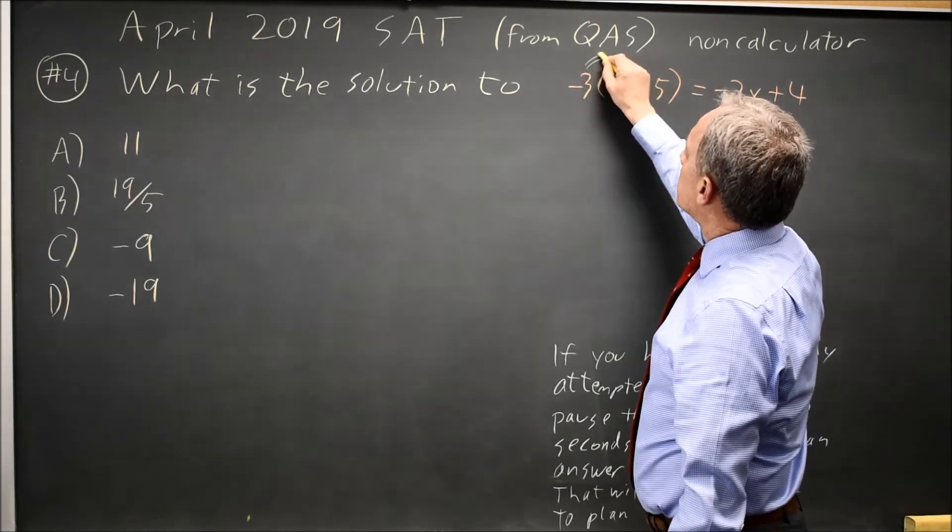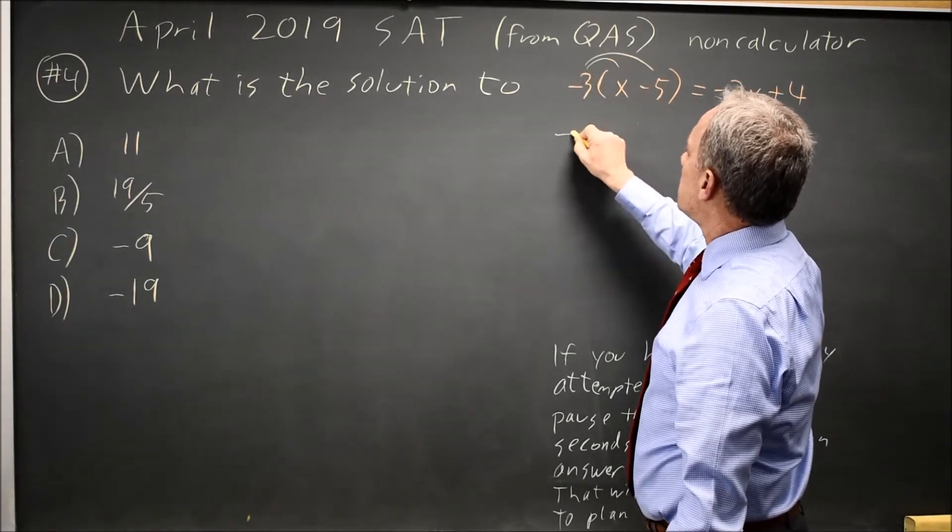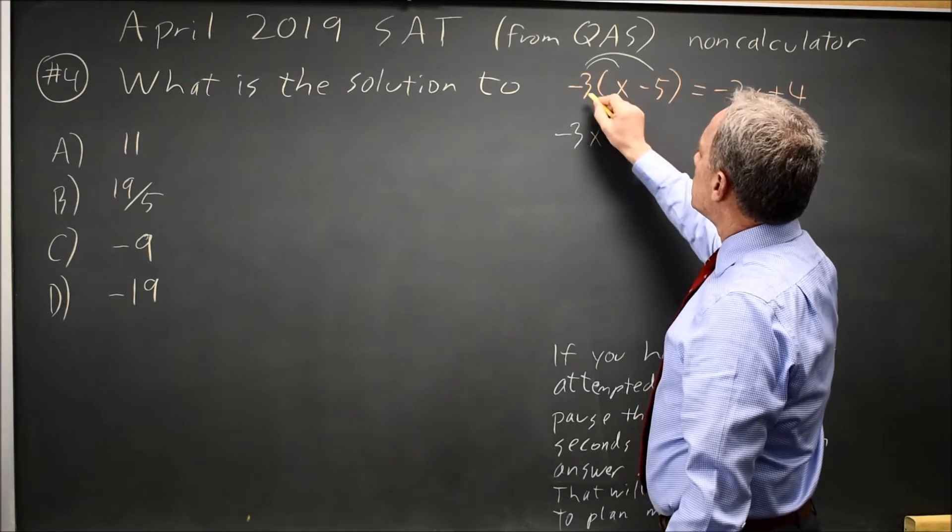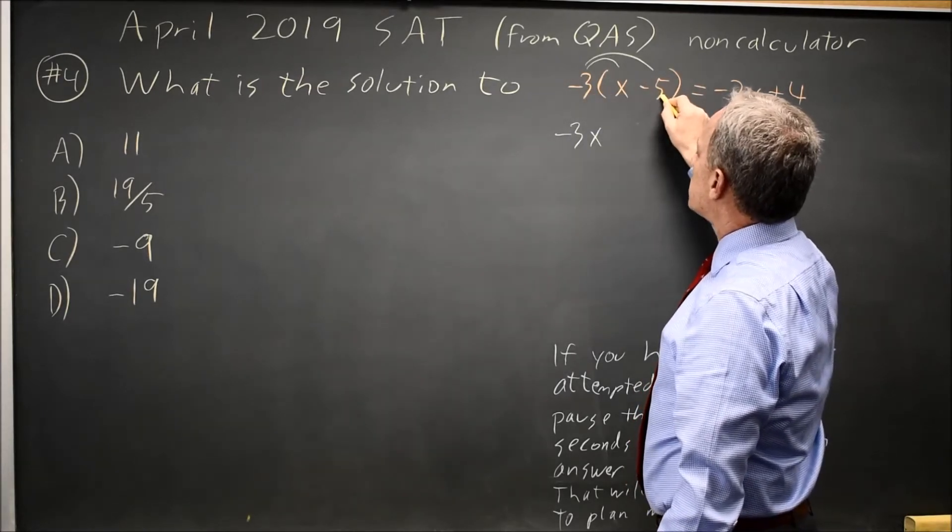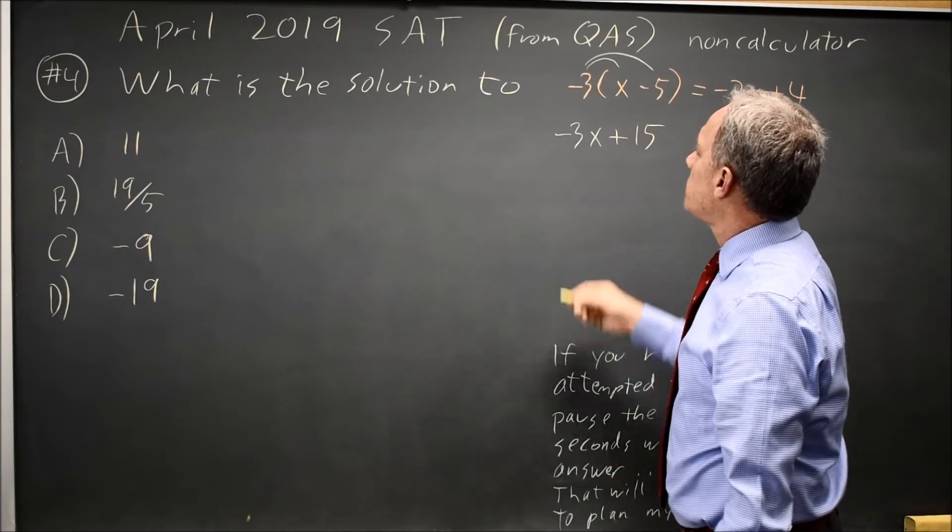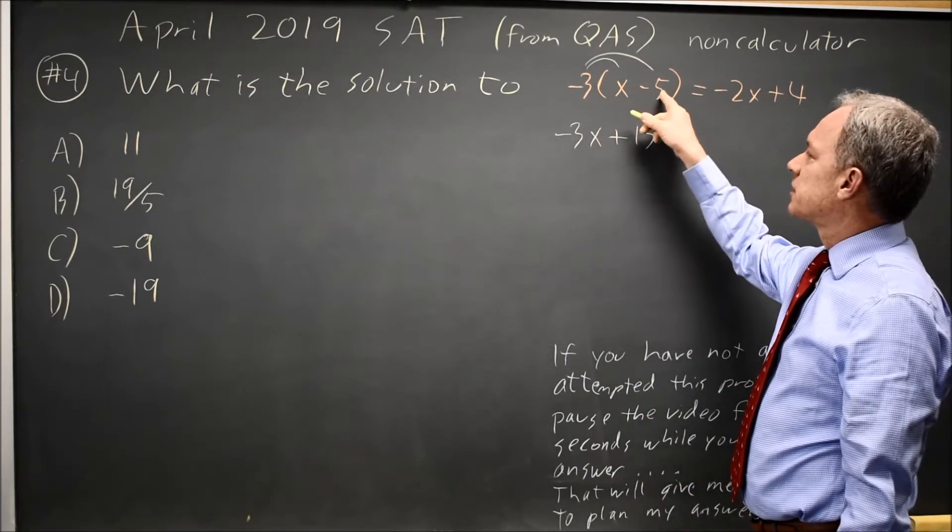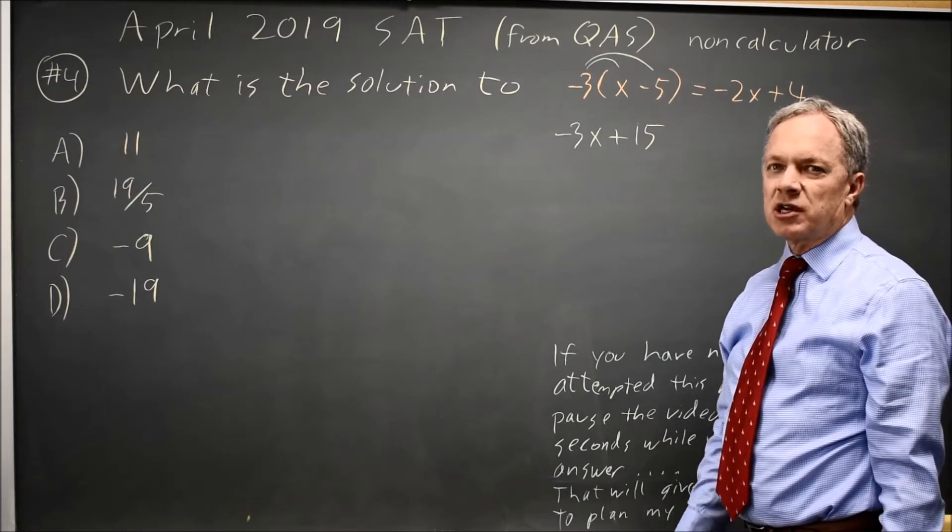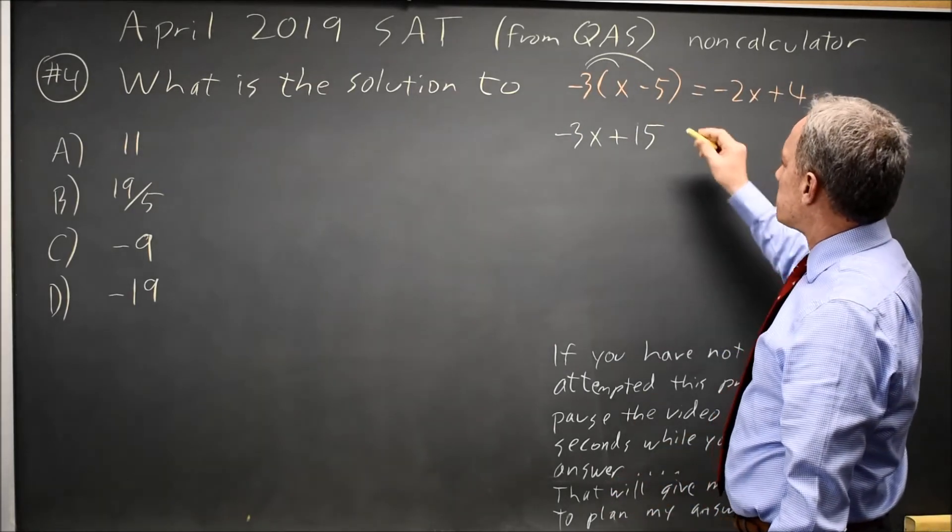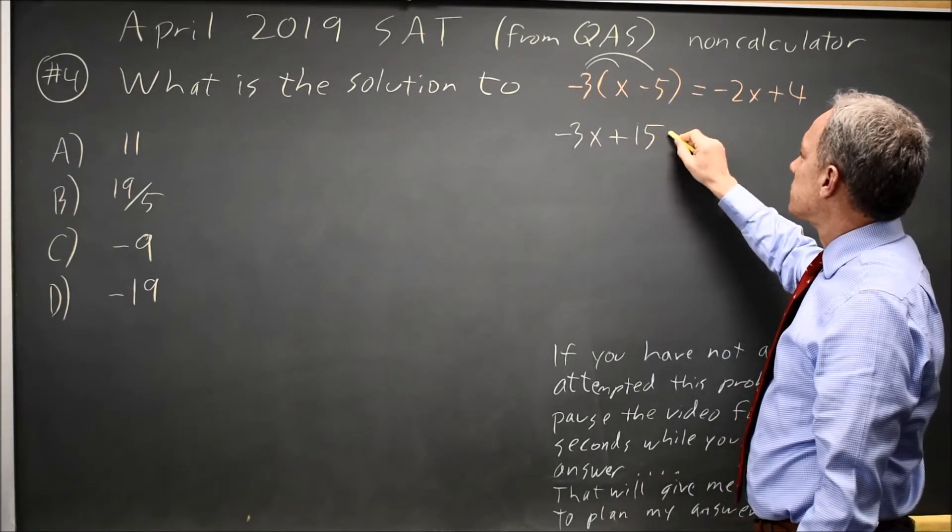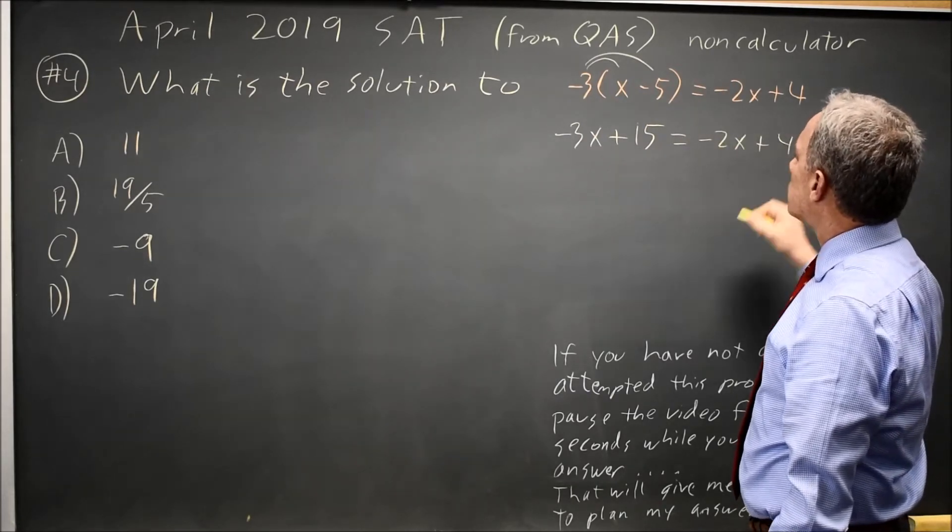We'll solve it by first distributing negative 3x. Negative 3 times negative 5 is plus 15. Common errors are failing to distribute your coefficient outside to the second term inside the parentheses or dropping a negative when you do distribute, so they'll often have a negative that you can distribute. Equals negative 2x plus 4.